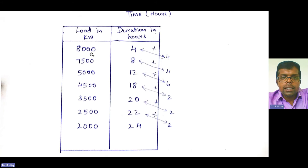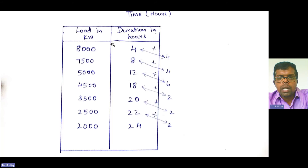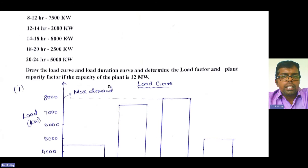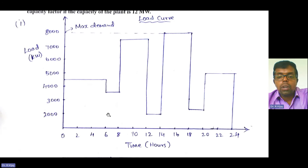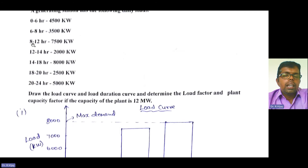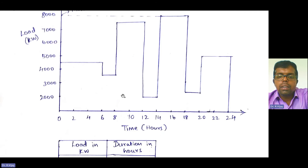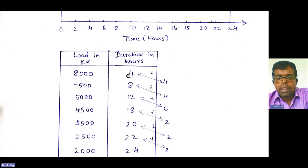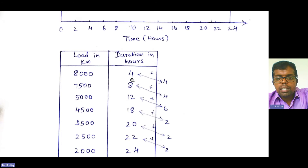The sorted loads are: 8000, 7500, 5000, 4500, 3500, 2500, and 2000 kilowatts. For each, we write the corresponding cumulative duration in hours. 8000 kilowatts is for 14 to 18 hours — that is 4 hours. 7500 kilowatts is for 8 to 12 hours — also 4 hours, so cumulative duration is 4 plus 4 equals 8 hours. 5000 kilowatts is for 4 hours, so 8 plus 4 equals 12 hours.